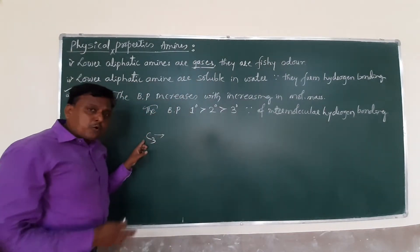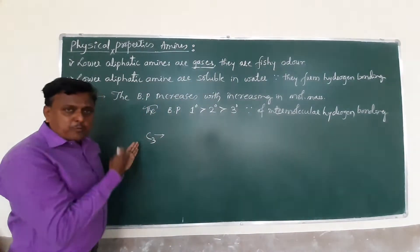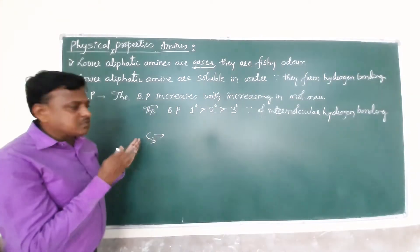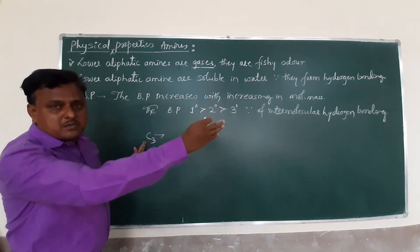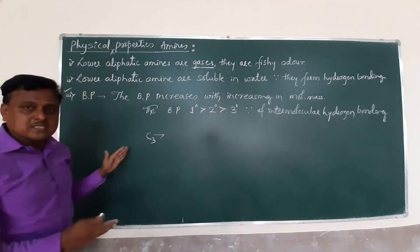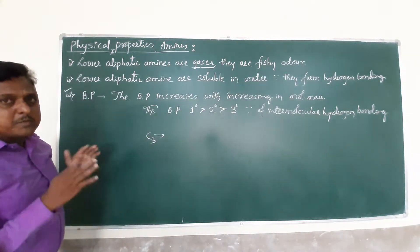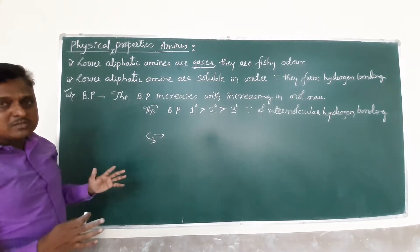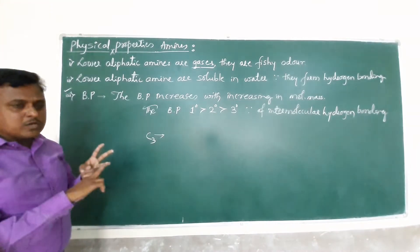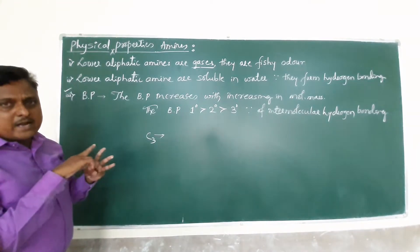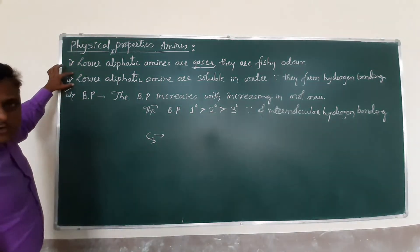Propyl amines (C3) are available as a liquid, and with increasing carbon number they exist as solids. The conclusion is that amines are available in all three forms: solid, liquid, and gas.